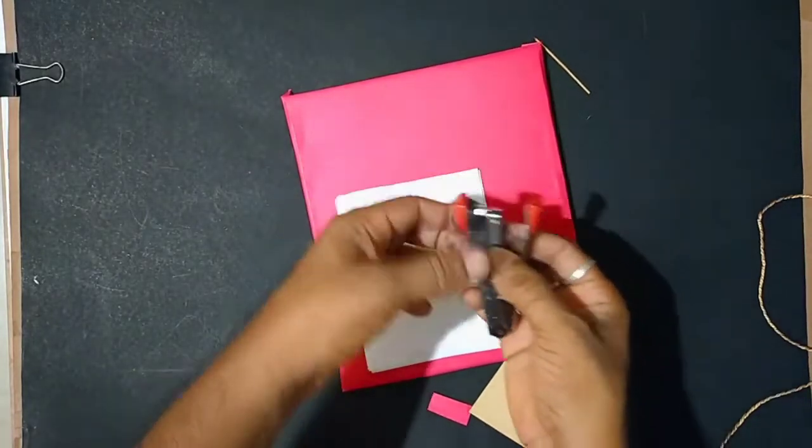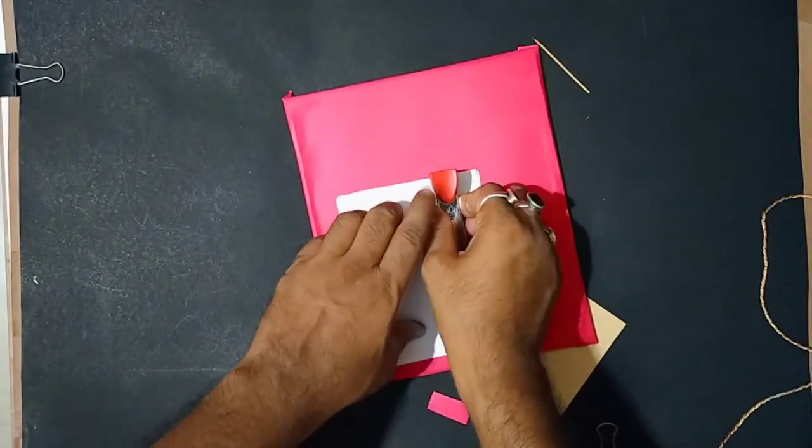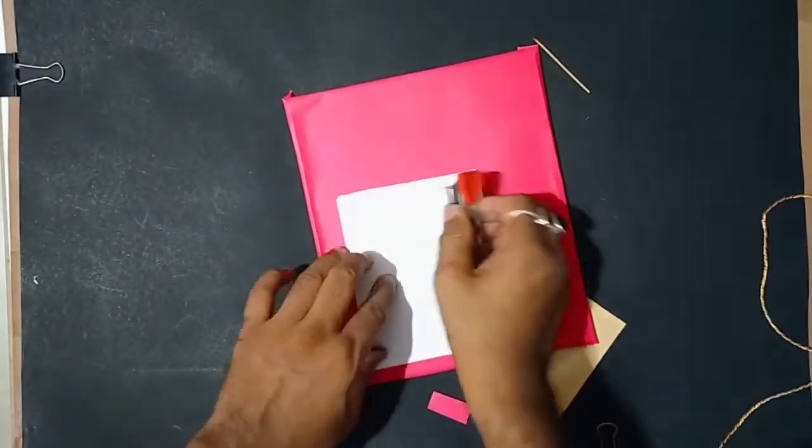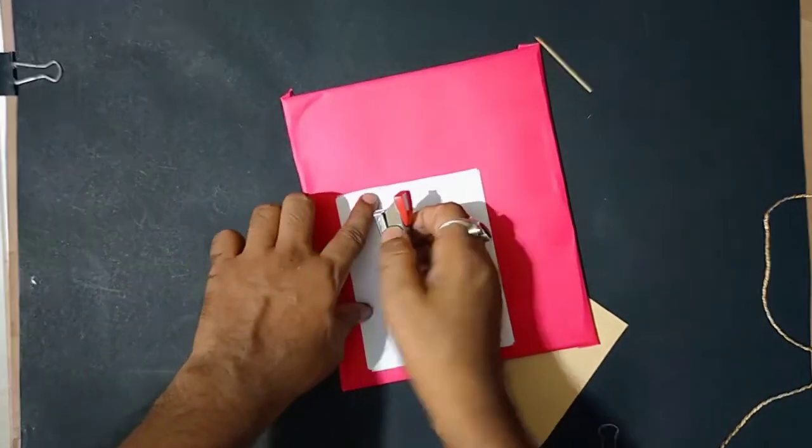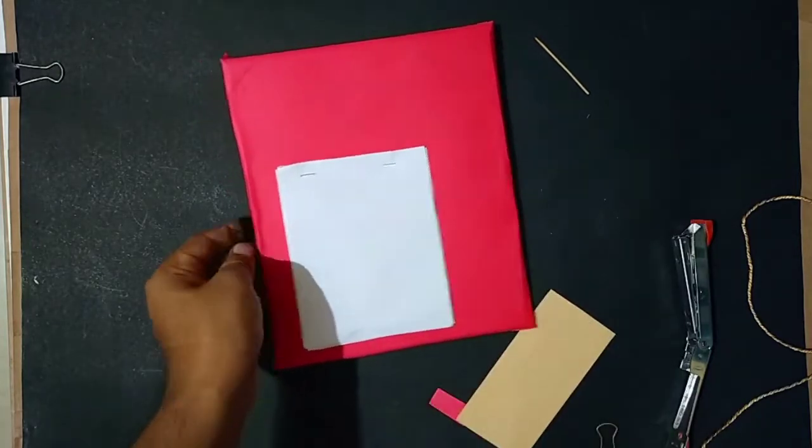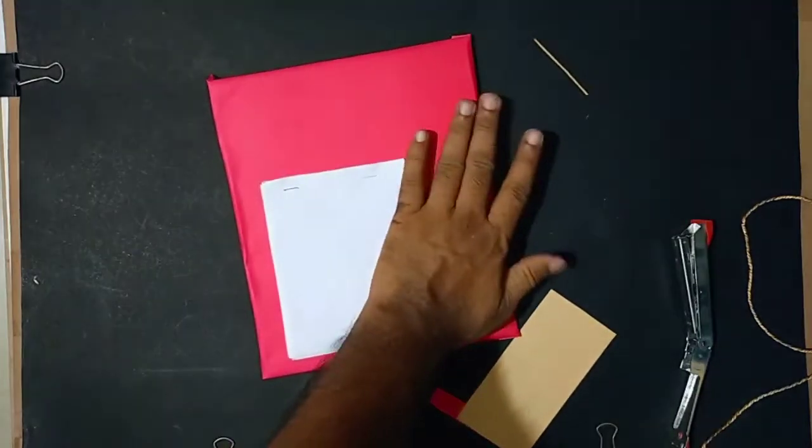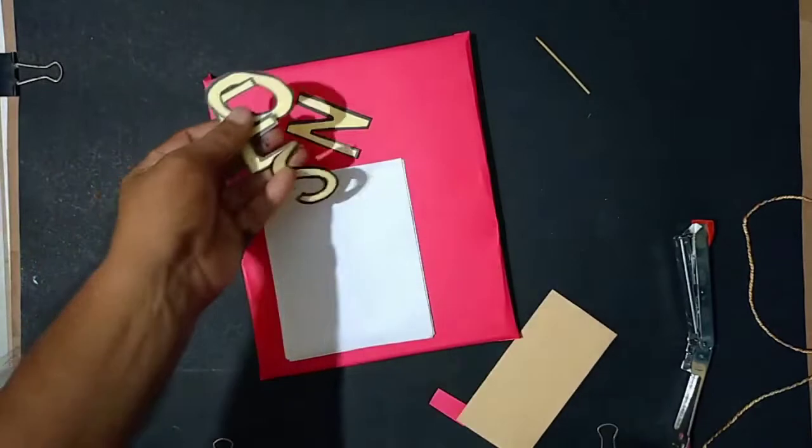If there is a problem while stapling the paper onto the board, you can stick the paper with the help of glue over one another, so that it becomes easier for you to tear the paper when you write the note.